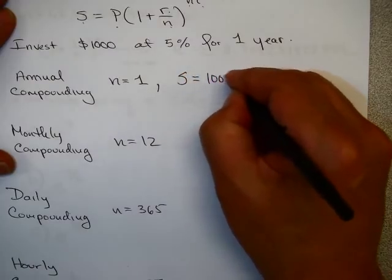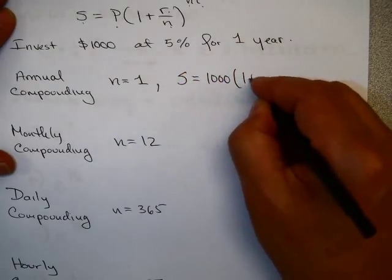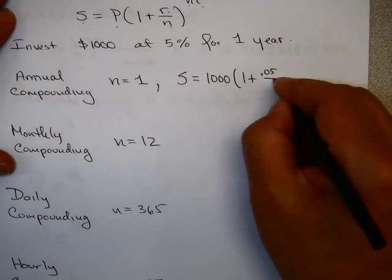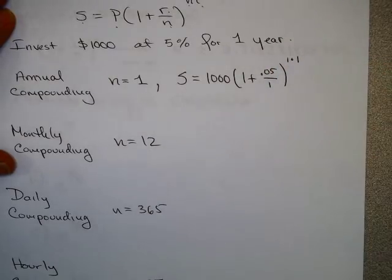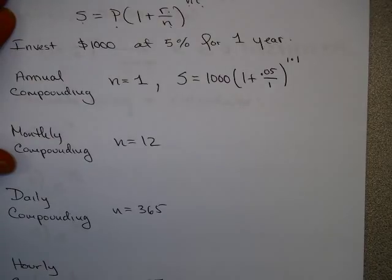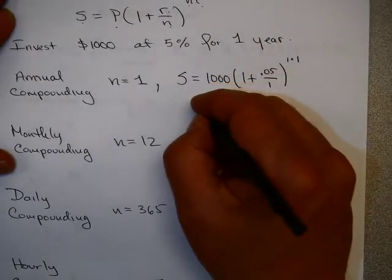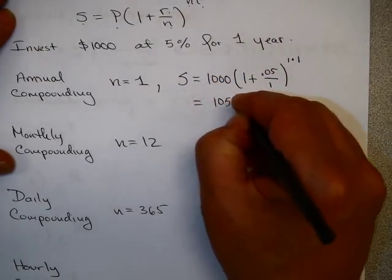Your future value is going to be $1,000 times (1 + 0.05/1) to the 1 times 1. Using your calculator, see if you can find that answer. I get $1,050. So that's very nice.